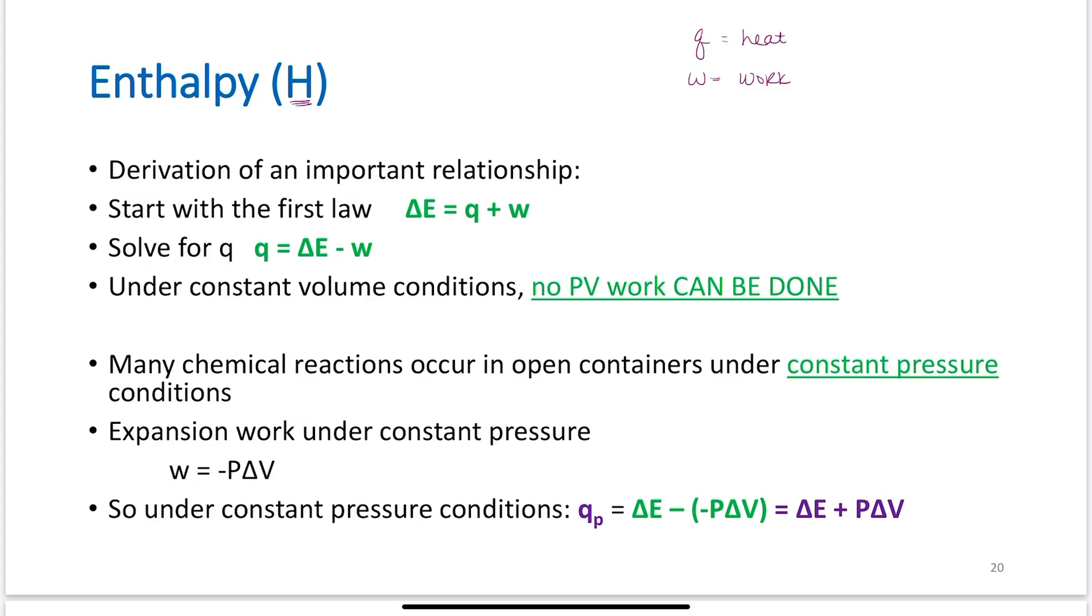Many chemical reactions occur under constant pressure conditions. If we have an open container working in a lab and that system is open, that is under atmospheric pressure - constant pressure conditions. Expansion work under constant pressure conditions, W equals negative PΔV.